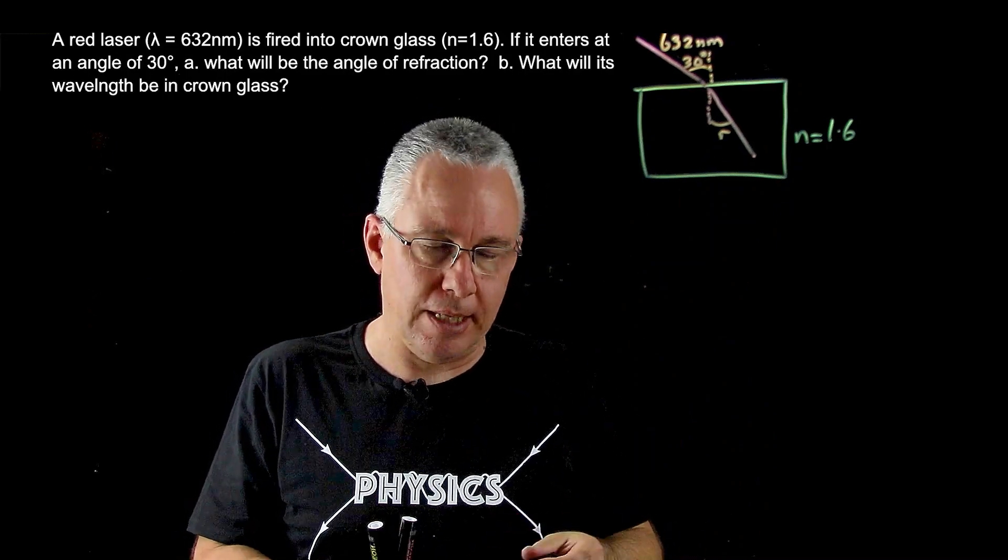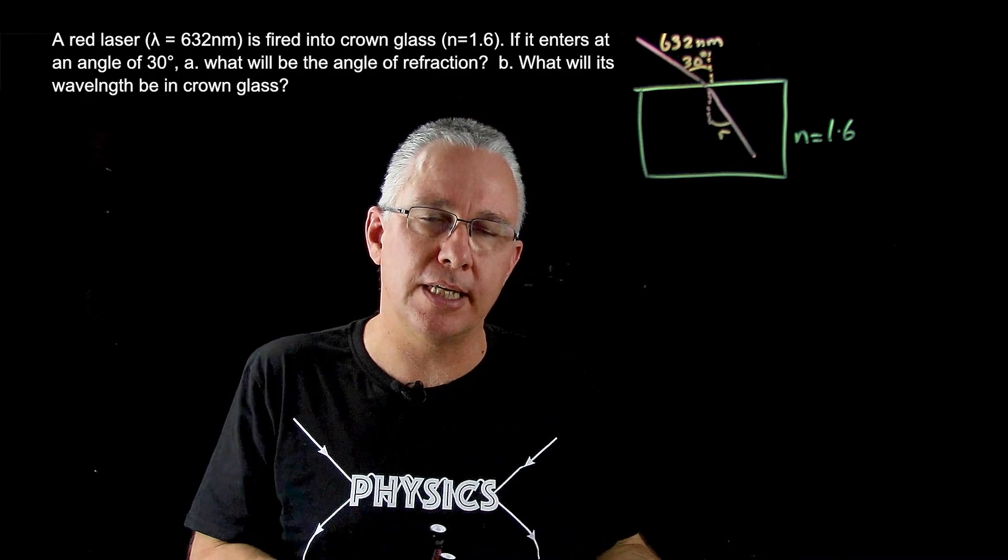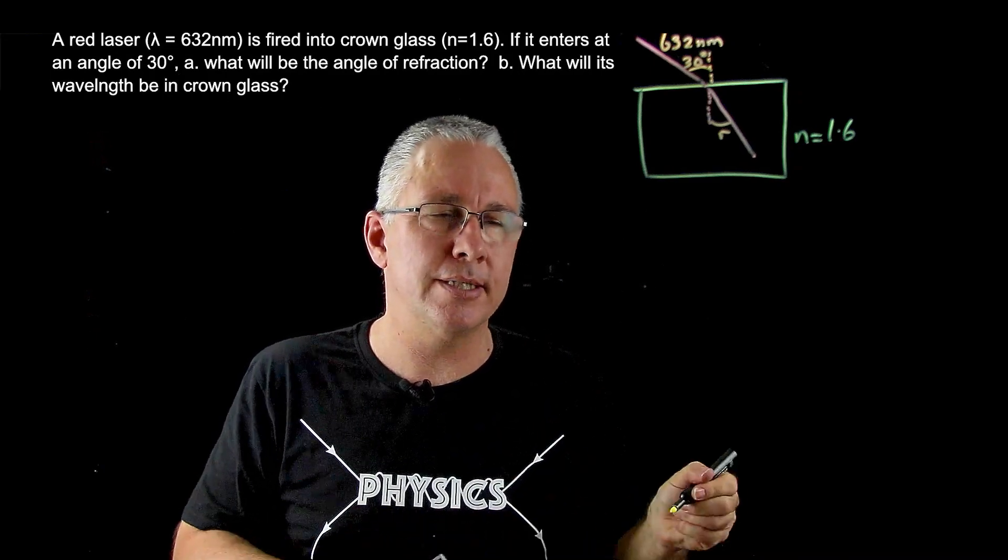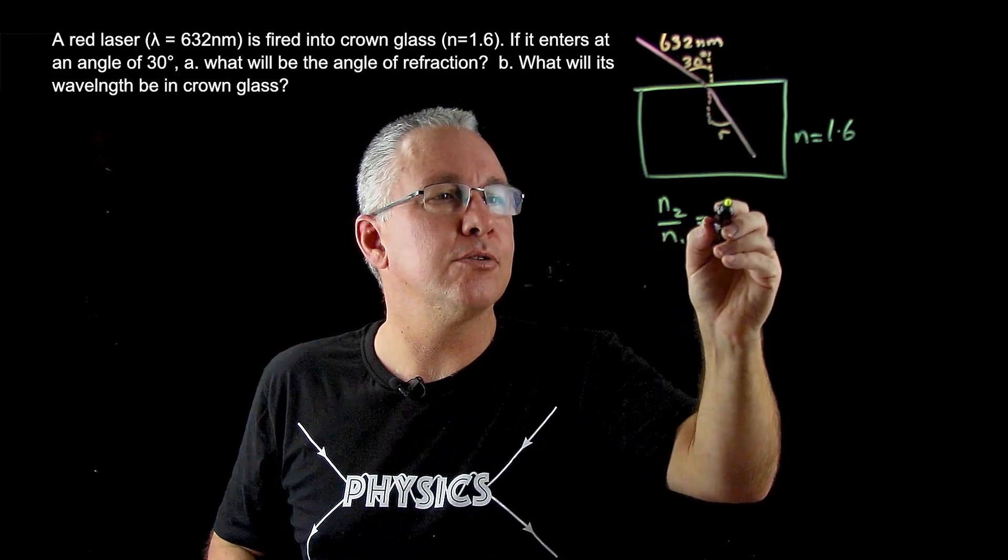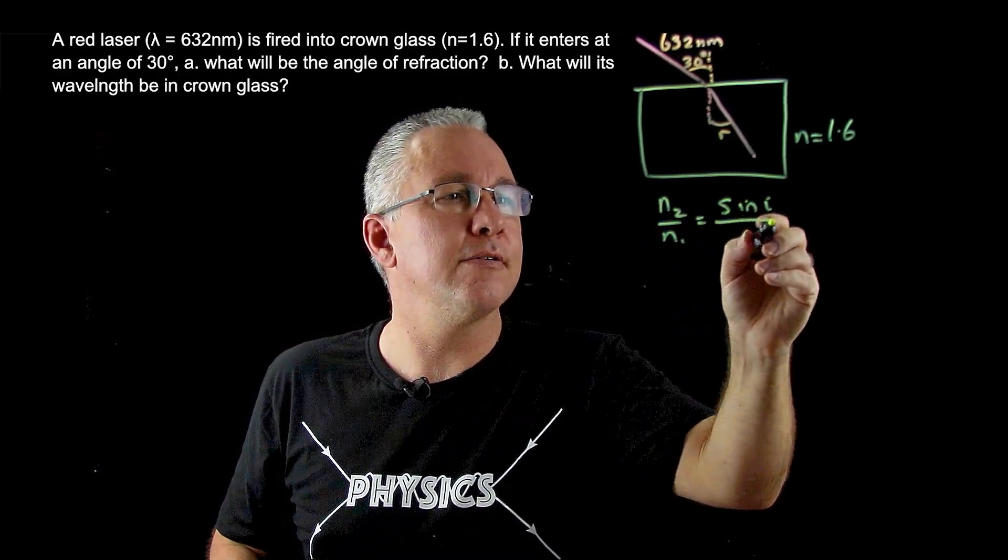Lastly, of course, you set out the formula. Now this formula is often set out in different ways. The way I always teach my students is to simply say N2 over N1 is equal to sin I over sin R.